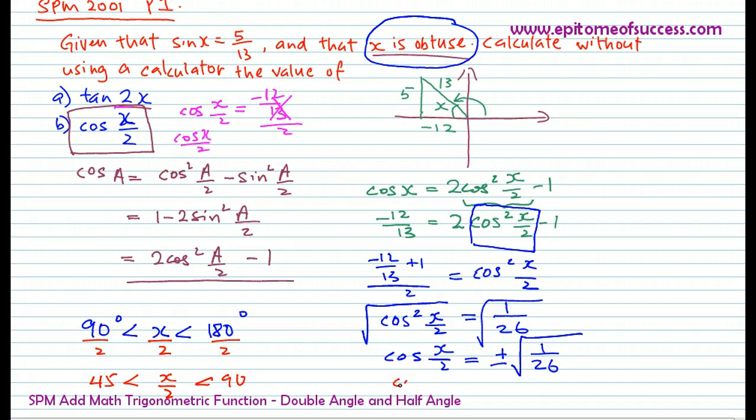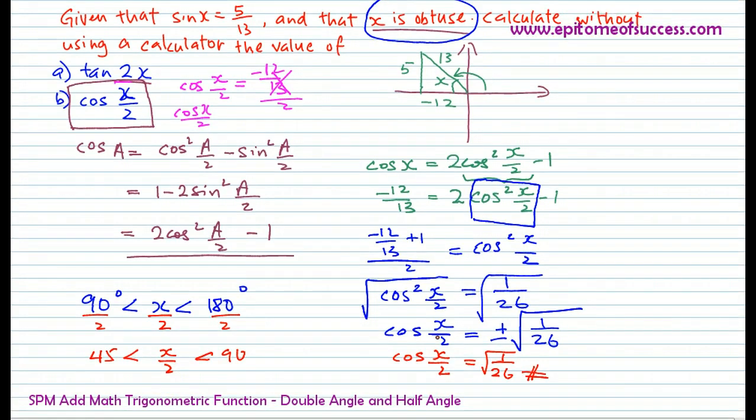Therefore, your answer should be cos x over 2 equals positive 1 over square root 26. That is your final answer. Do remember you're not required to find the angle x. You're just required to find the value of cos x over 2. What you do have to pay close attention when you reach here is the quadrant stated in the question. But because it is a half, you have to remember that all the limits or the range of the angles are actually halved. Then you pick the appropriate quadrant and you will know whether it's positive or negative.